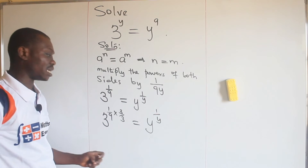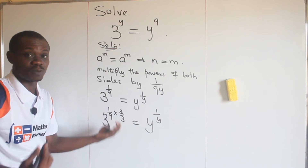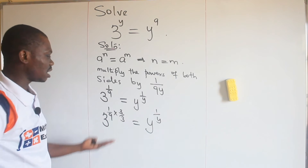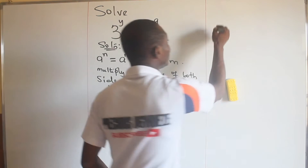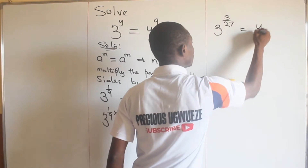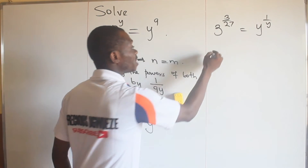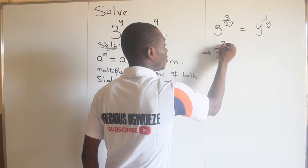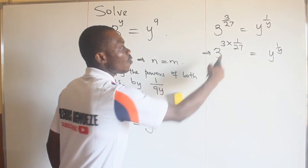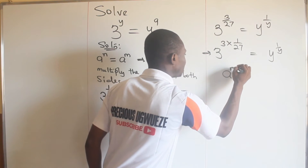If you simplify the left hand side you get something that looks like what we are looking for. Three over three equals one, and one times one over nine is still the same. Simplifying: one times three gives us 3 raised to the power of three all over nine times three is 27, equal to y raised to the power of one over y. By the rule of indices, this is the same as 3 raised to the power of three times one over 27.